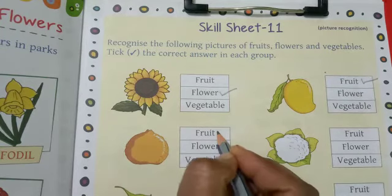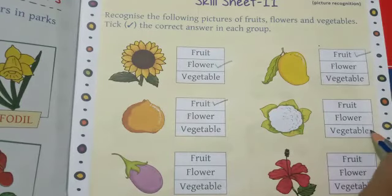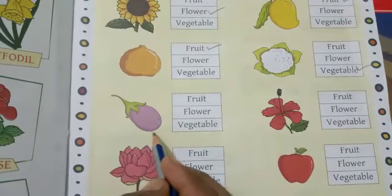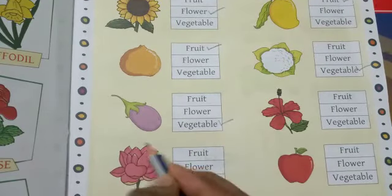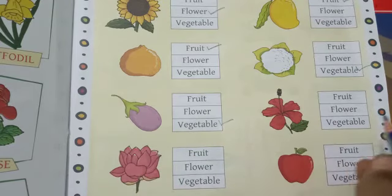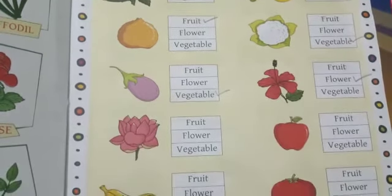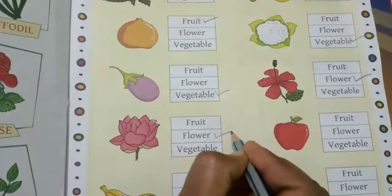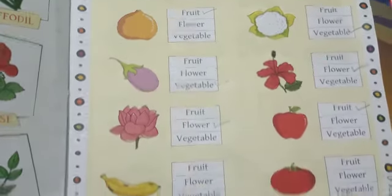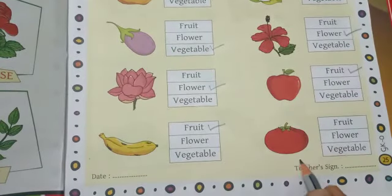Orange is also a fruit. This side, cauliflower. Cauliflower is a vegetable. Next is brinjal. Brinjal is a vegetable, and brinjal is the king of vegetables. Next, hibiscus. Hibiscus is a flower. Next, lotus. Lotus is a flower. Next, apple. Apple is a fruit. Next, banana. Banana is also a fruit.